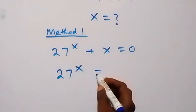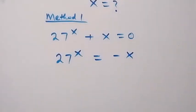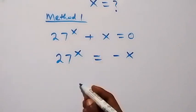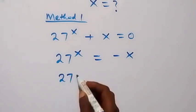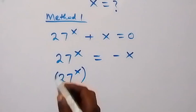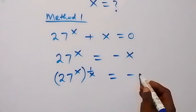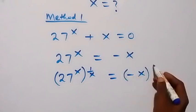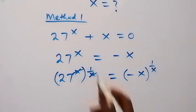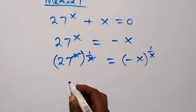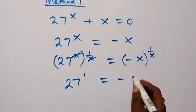27 raised to power x equals to minus x. Next, we can remove this power of x and multiply both sides by 1 over x. So we have 27 raised to power x, times raised to power 1 over x, equals minus x also raised to power 1 over x. Since this multiplied by this power will cancel out, what we have left is 27 raised to power 1, which is 27, equals to minus x raised to power 1 over x.